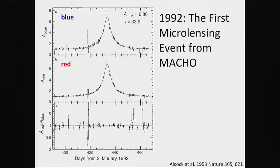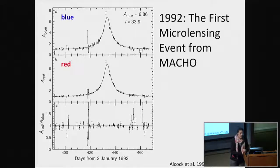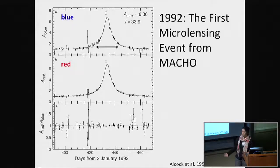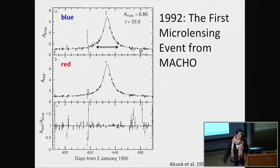The first microlensing events were discovered in 1992 and published in 1993. This is the first microlensing event observed by the MACHO collaboration. We have two panels, one showing the event in blue and one in red, showing magnification as a function of time. The same microlensing event appears in both panels; because the form of the signal is the same, that confirms it's microlensing, since microlensing is achromatic. The timescale is about 17 days, and a cadence of once per night was perfectly acceptable to resolve this stellar event.